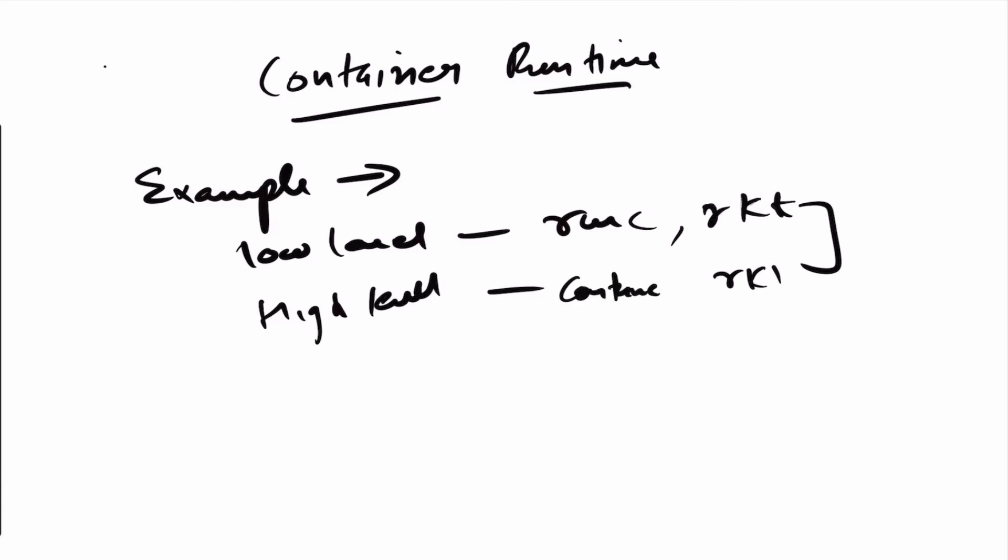You would find runC and containerD both in Docker. RunC is used for low-level implementation like running containers, just concerned with running containers. ContainerD is more concerned with high-level operations like creating APIs, managing APIs, managing images, sharing images, and things like that. I hope you found this interesting - the difference between high-level and low-level container runtimes. If you have any doubts or think this wasn't enough, please comment in the video and I'll get back to you. Please subscribe to the channel before leaving, and thank you for watching.